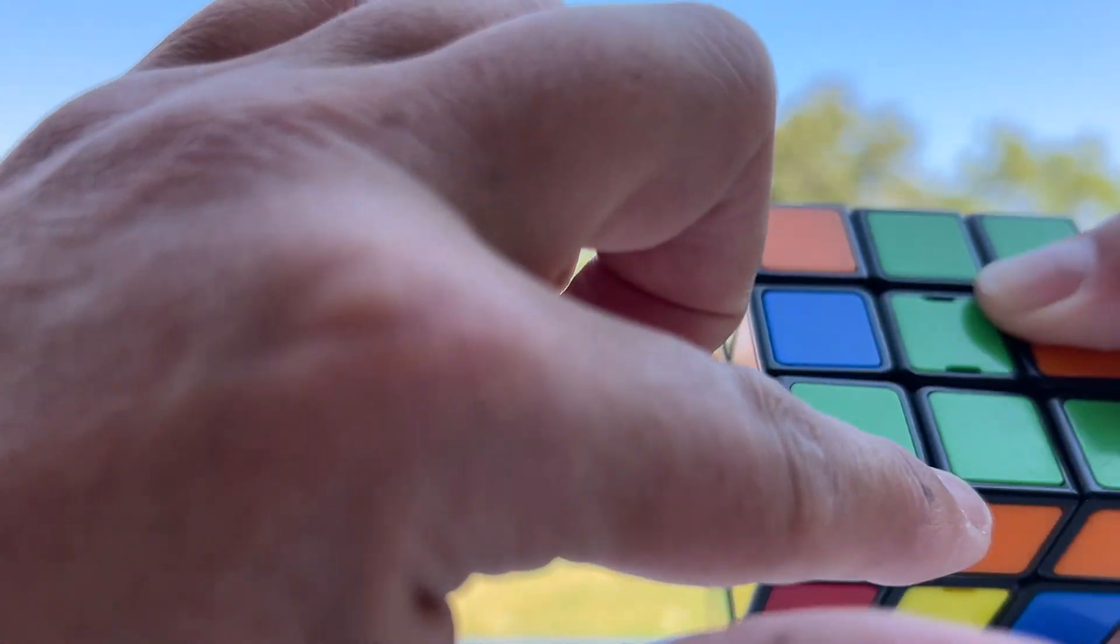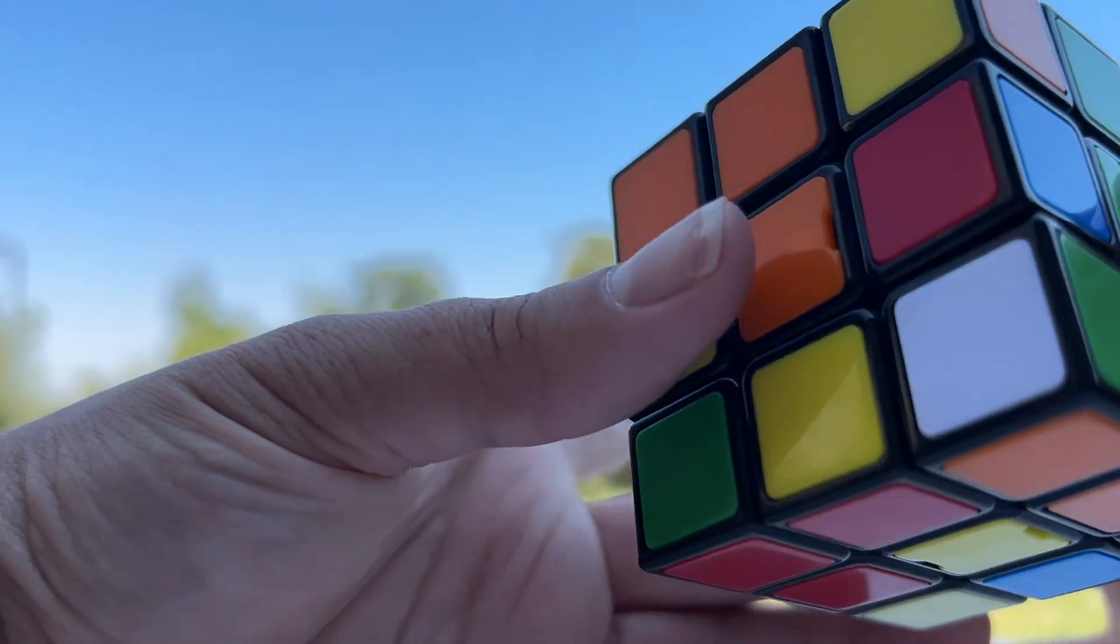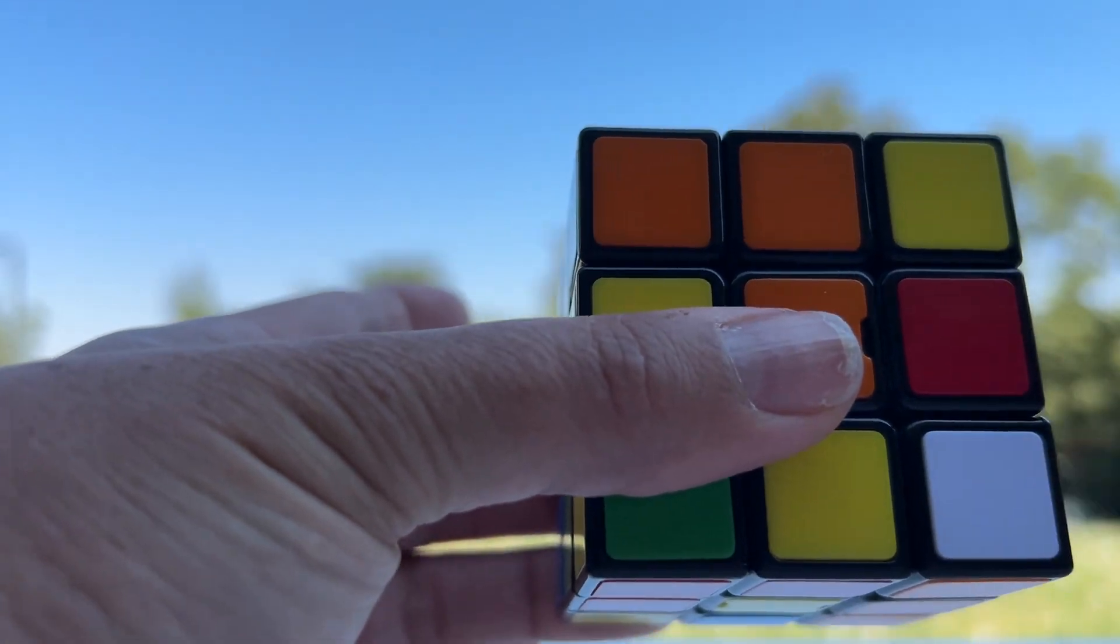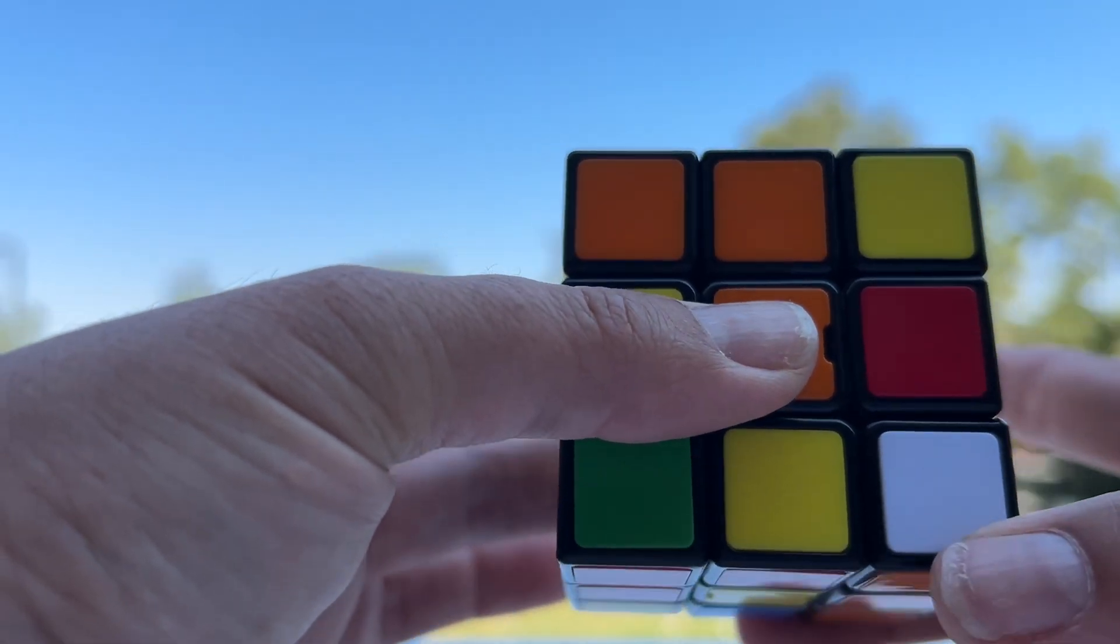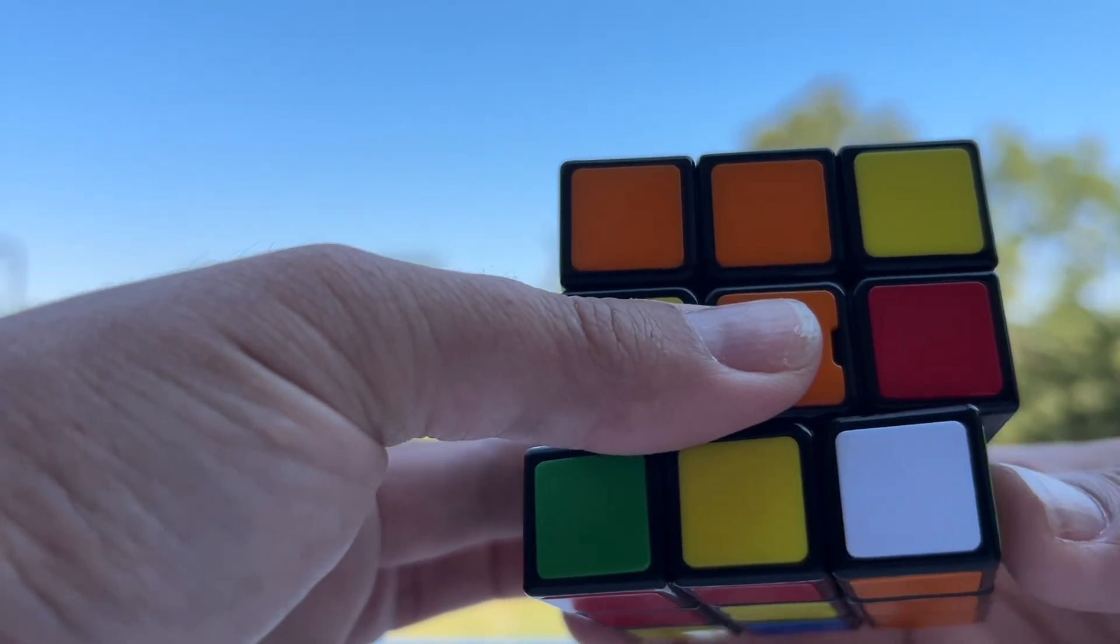Now we've connected those two so we rotate the cube without turning any of the faces so we can see that little white corner. And now it turns this way because we want it to go up here. We want to keep those together so turn it this way.